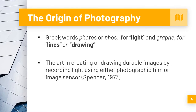Let us first talk about the origin of photography. The word photography is from two Greek words: photos or phos for light, and graph for lines or drawing. Therefore, photography is described as the art of creating or drawing durable images by recording light using either photographic film or image sensor, according to Spencer of 1973.